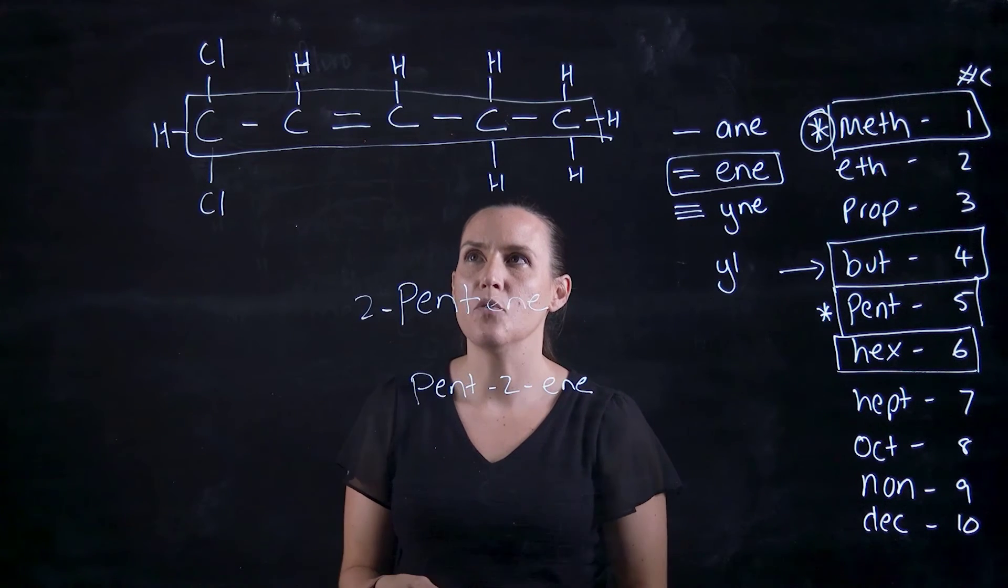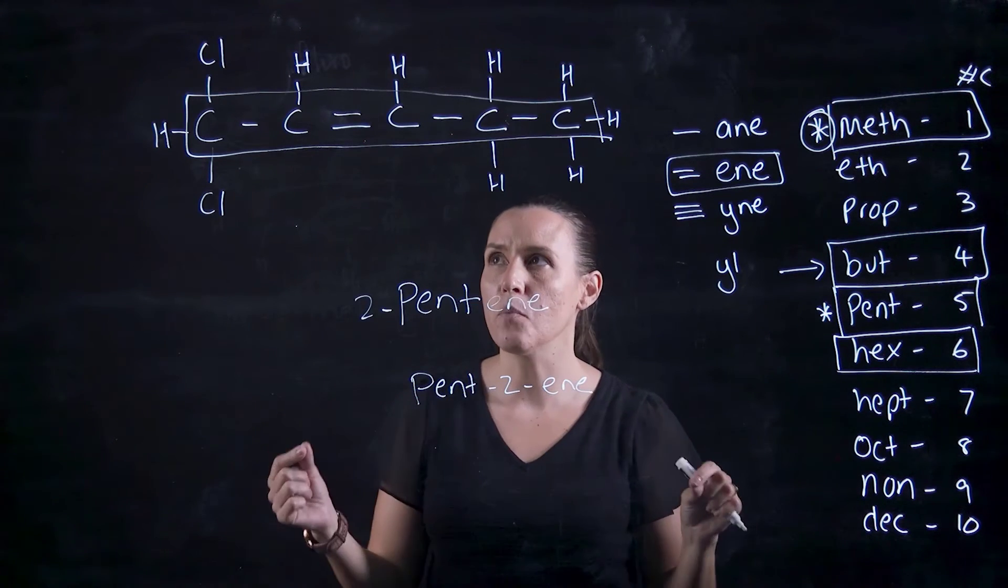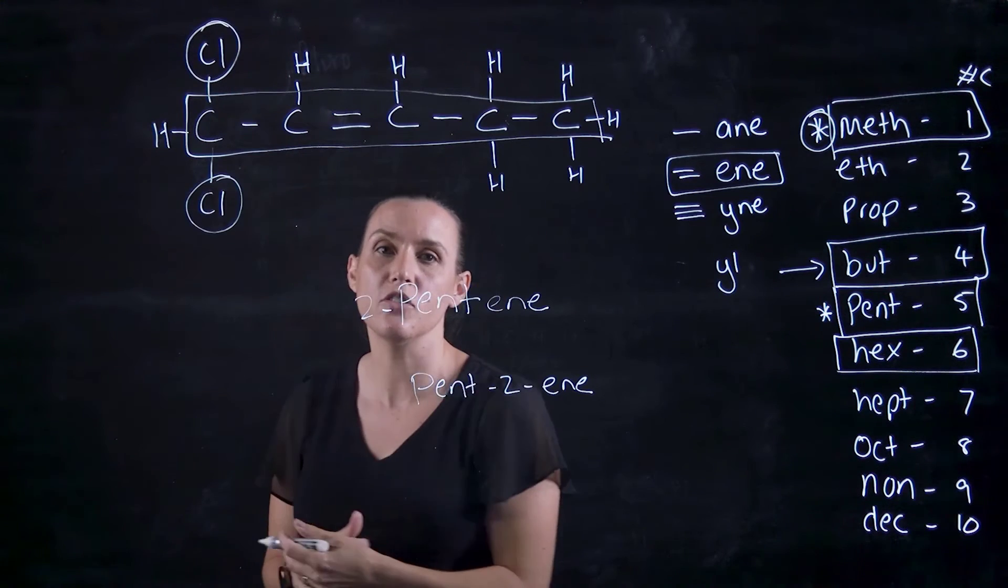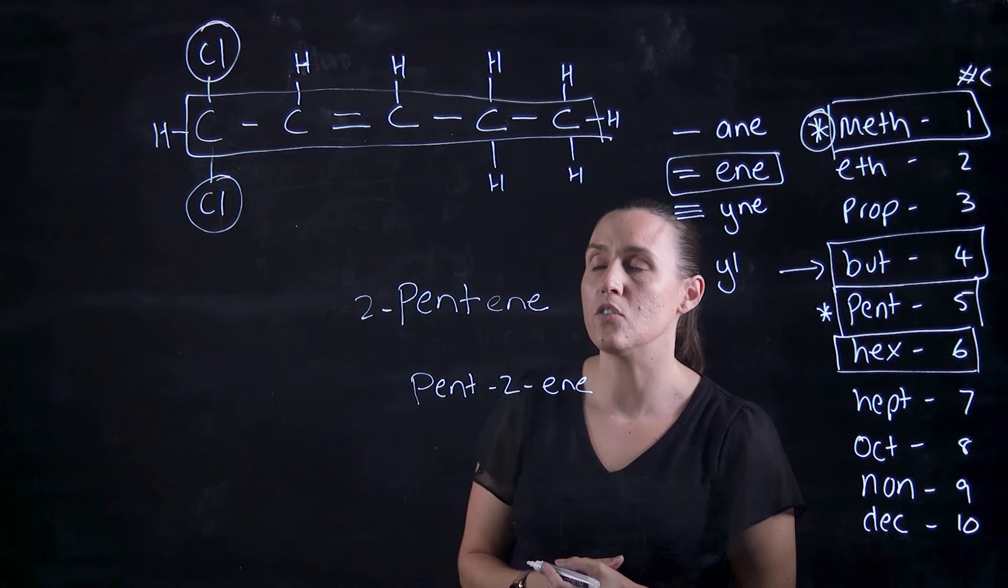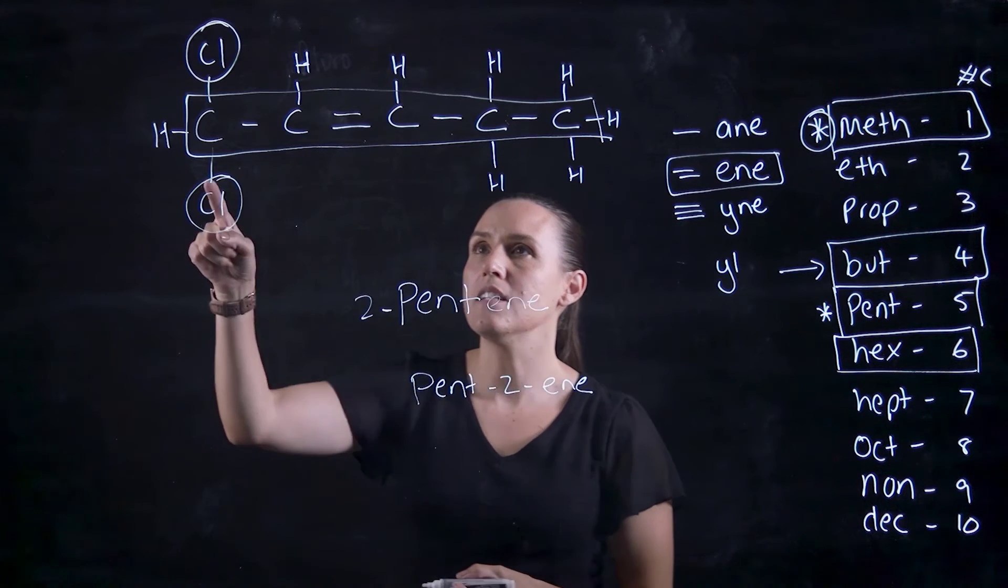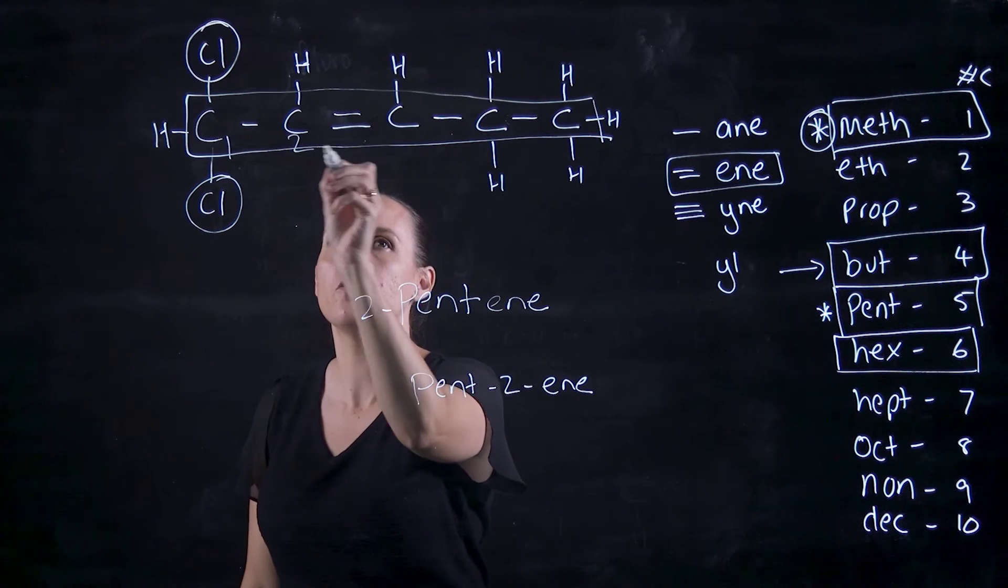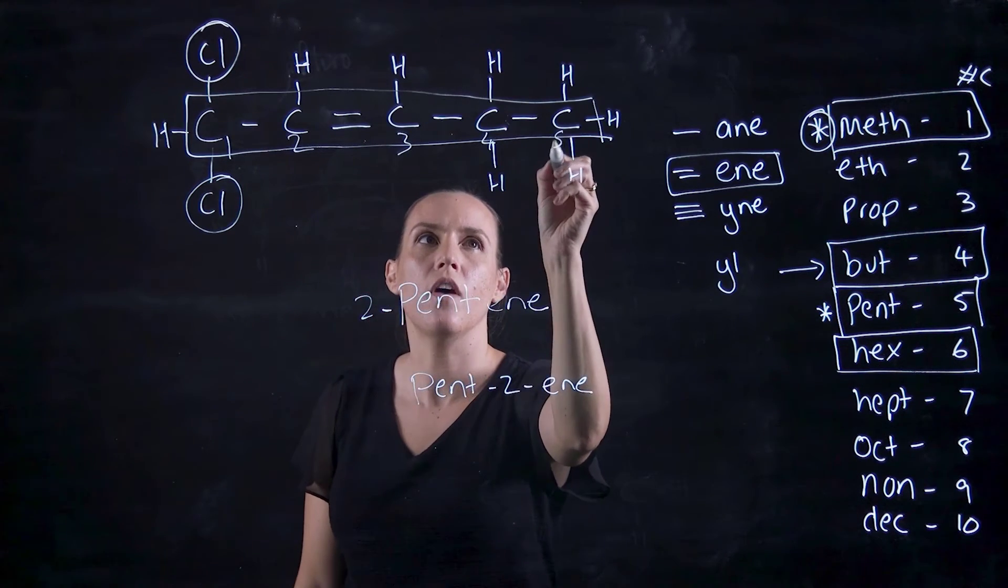Now we've taken into account the double bond, the backbone, we need to look at the substituents coming off that aren't hydrogen. So in this one, we've just got two chlorines. And because this one needs to be on the lowest possible number, we need to go 1, 2, 3, 4, 5.